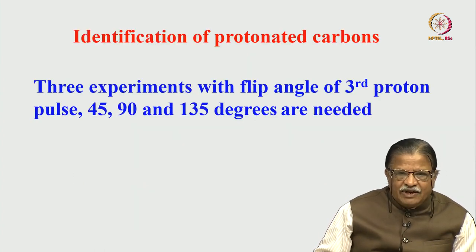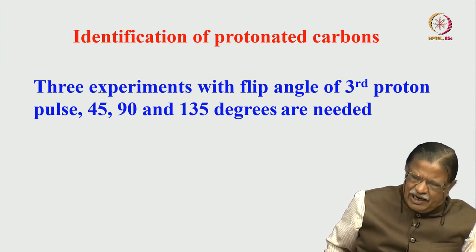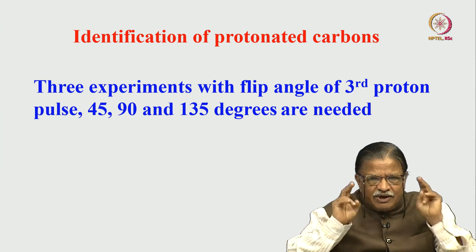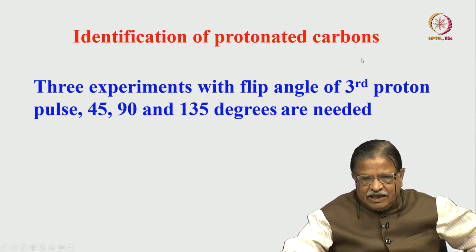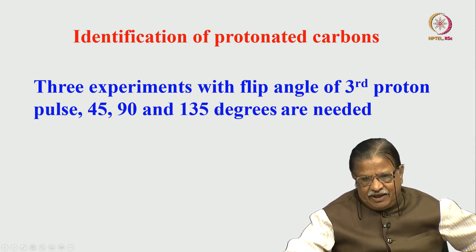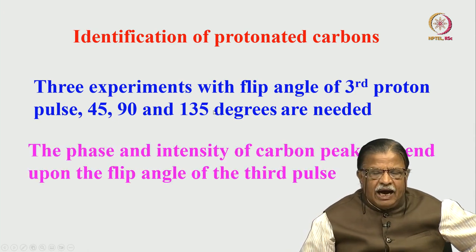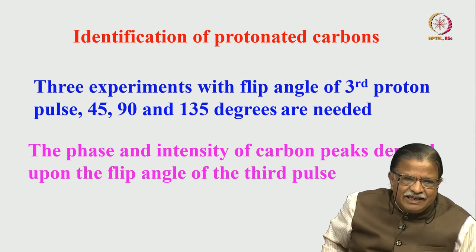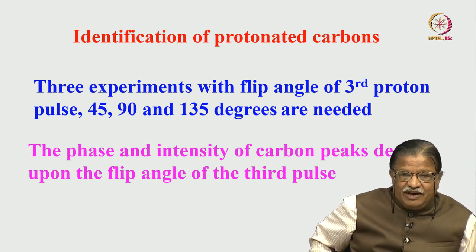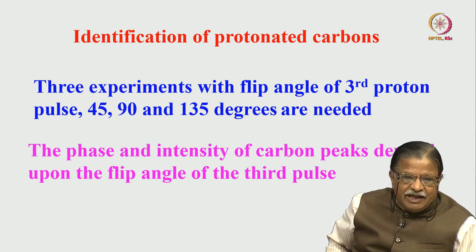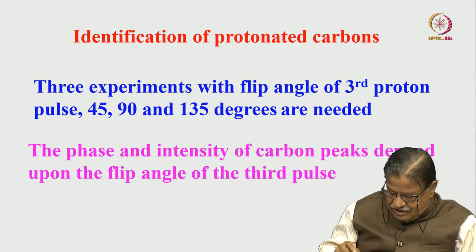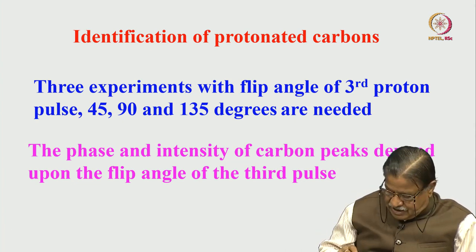This pulse sequence tells us, based on intensity and phase, which carbon is which—whether CH₃, CH₂, or CH. Graphically: with DEPT at 45°, all CH₃, CH₂, and CH carbons show positive intensity. With DEPT at 90°, CH₃ and CH₂ intensities go to zero—only single-proton-attached CH carbons have full intensity. With DEPT at 135°, CH₃ and CH are positive while CH₂ is negative. This is the key table to remember.